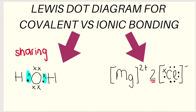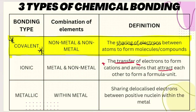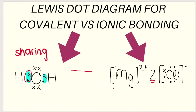Covalent is sharing — we can see that the oxygen and the hydrogen are close together and the pair of electrons belongs to both of them. Over here with ionic, there's no sharing, and we can also see brackets and charges. The other important thing is that ionic bonding is between a metal and a non-metal. In this case, magnesium is the metal and chlorine is the non-metal. Ionic will always, always, always be between a metal and a non-metal.